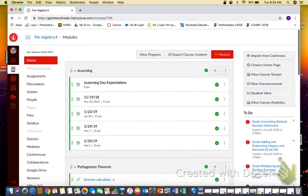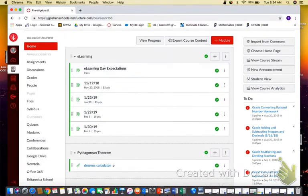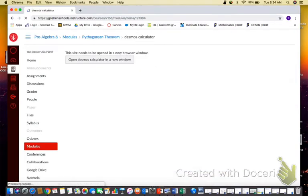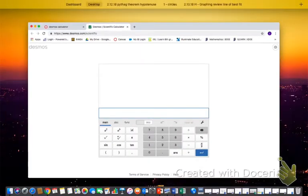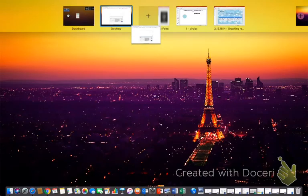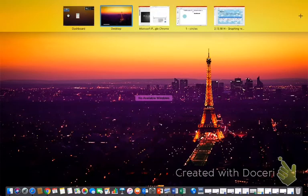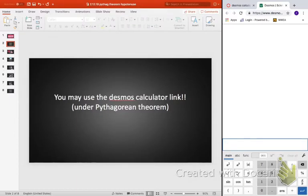If you go to your homepage on Canvas, it will be under eLearning. It's Pythagorean Theorem, Desmos calculator. Click on it. Open it in a new window. And then you are going to split your screen between this and the video that you are watching right now. So that you can work on your calculator while the video is playing.